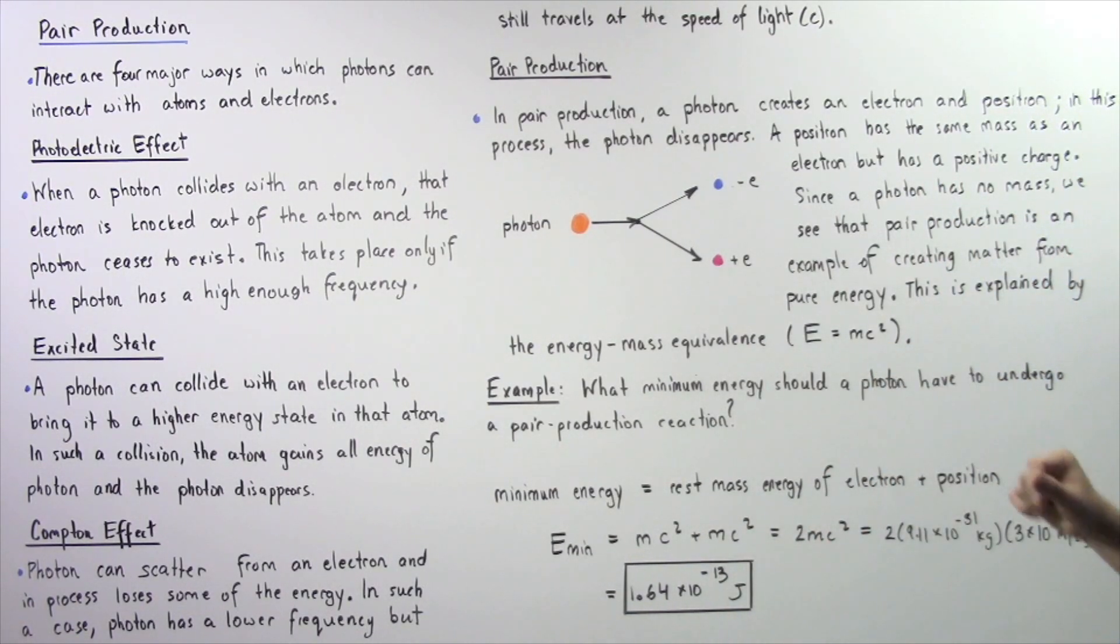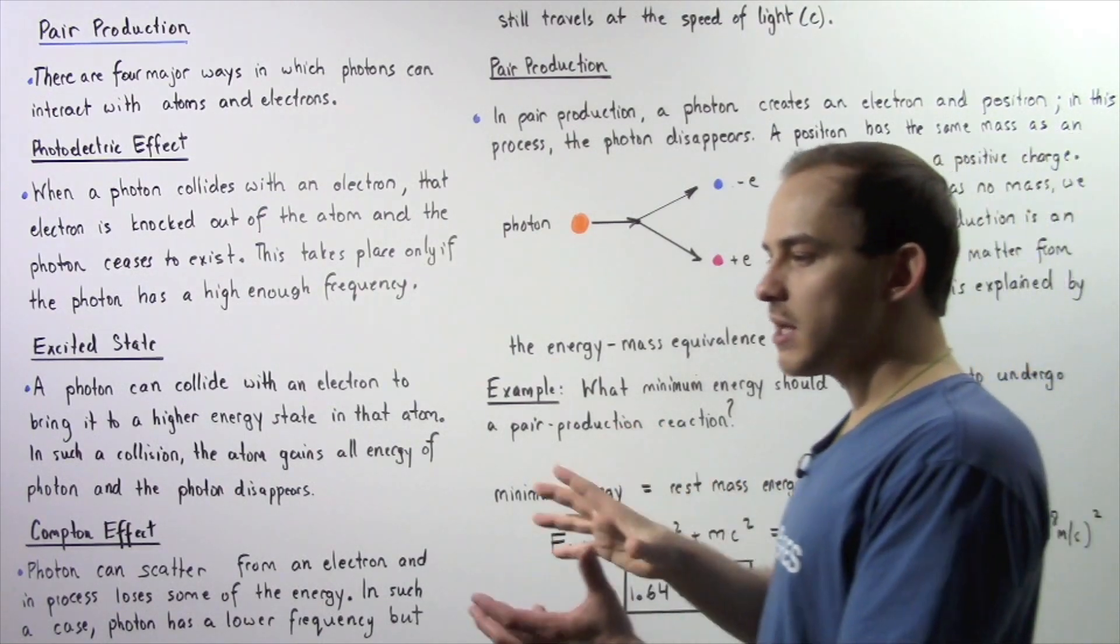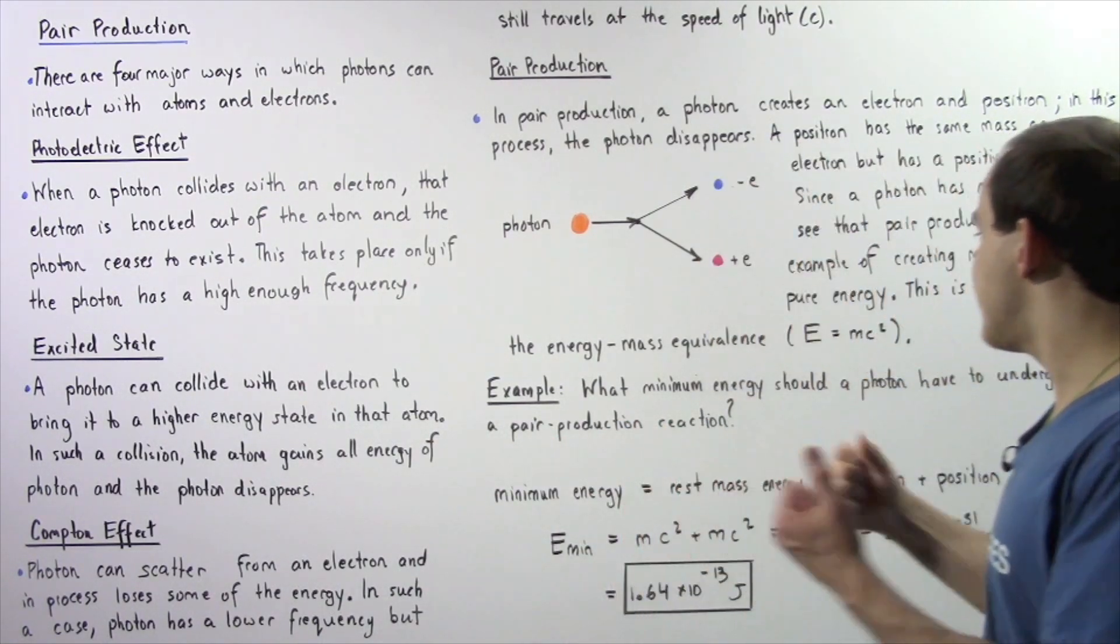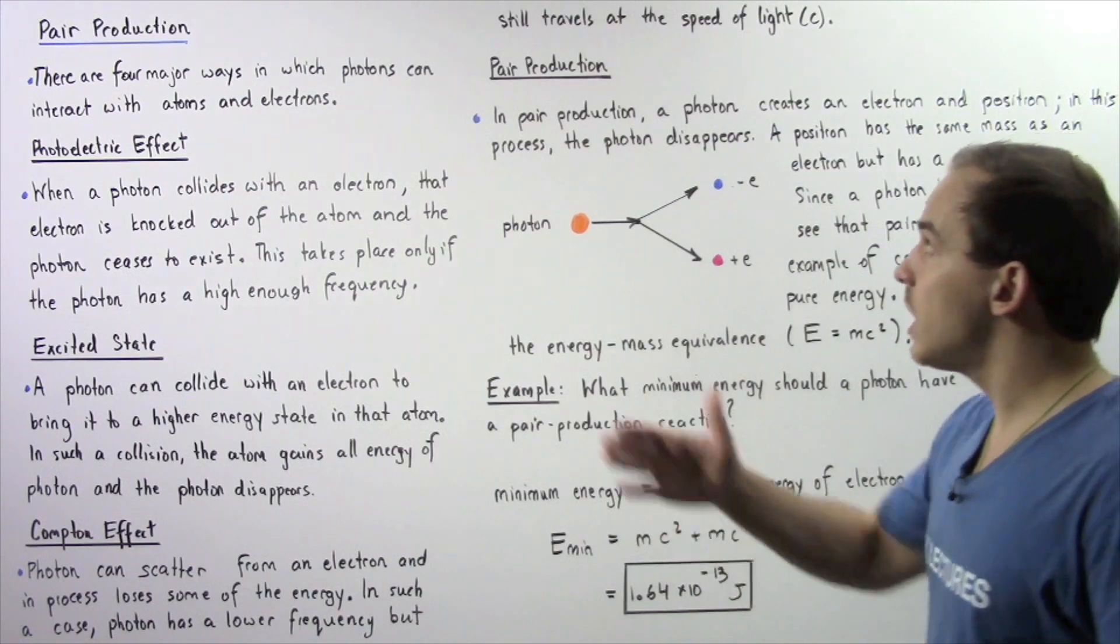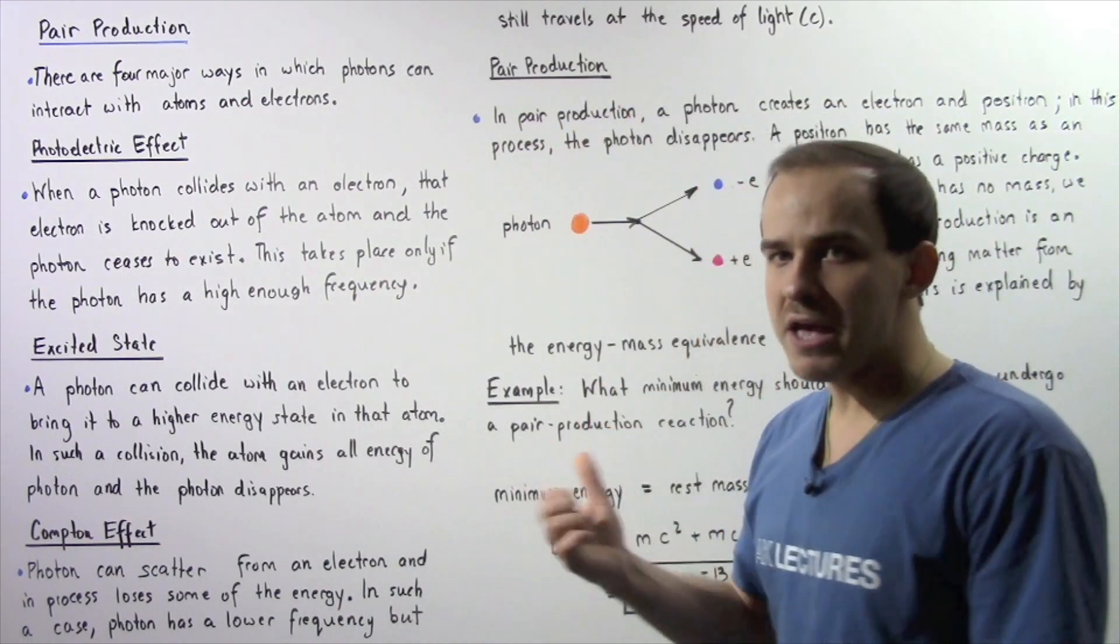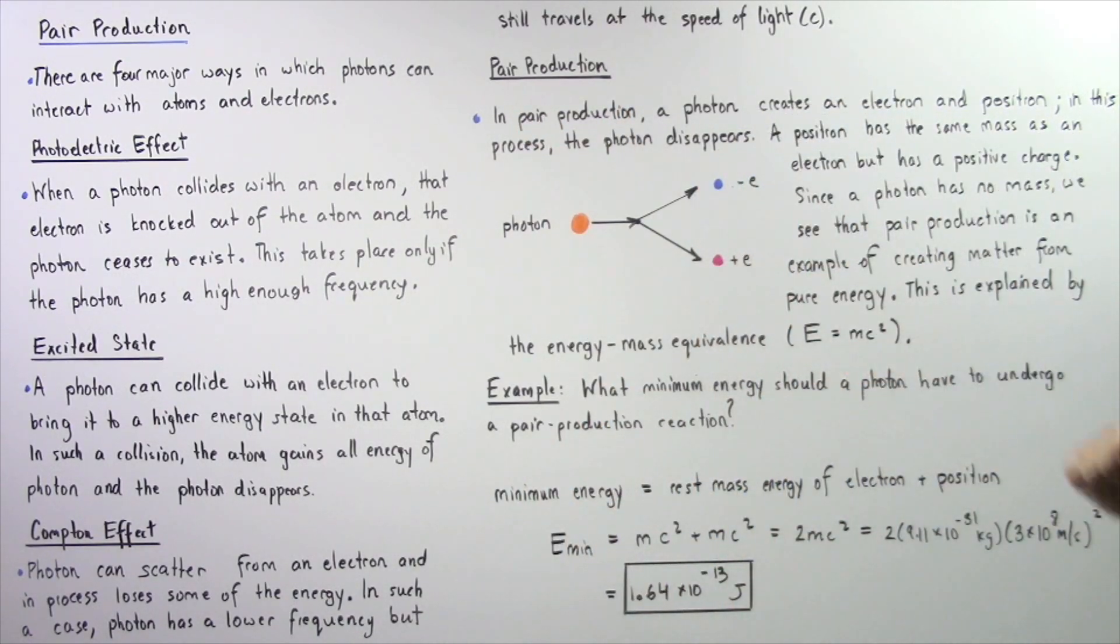But the energy is given by the following: mass times the speed of light squared. So basically, when we have a stationary subatomic particle, it essentially has this quantity of energy. So let's look at the following example in which we're going to apply the pair production method as well as this equation.